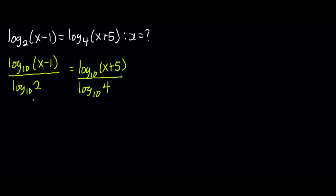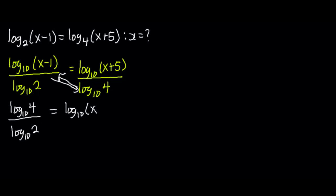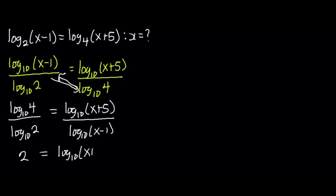What I'm going to do now is rearrange this equation such that all logarithms of numbers are on one side and logarithms of expressions on the other side. So we get log to the base of 10 of 4 divided by log to the base of 10 of 2, equal to log to the base of 10 of x plus 5 over log to the base of 10 of x minus 1. Now log to the base of 10 of 4 divided by log to the base of 10 of 2 is 2.